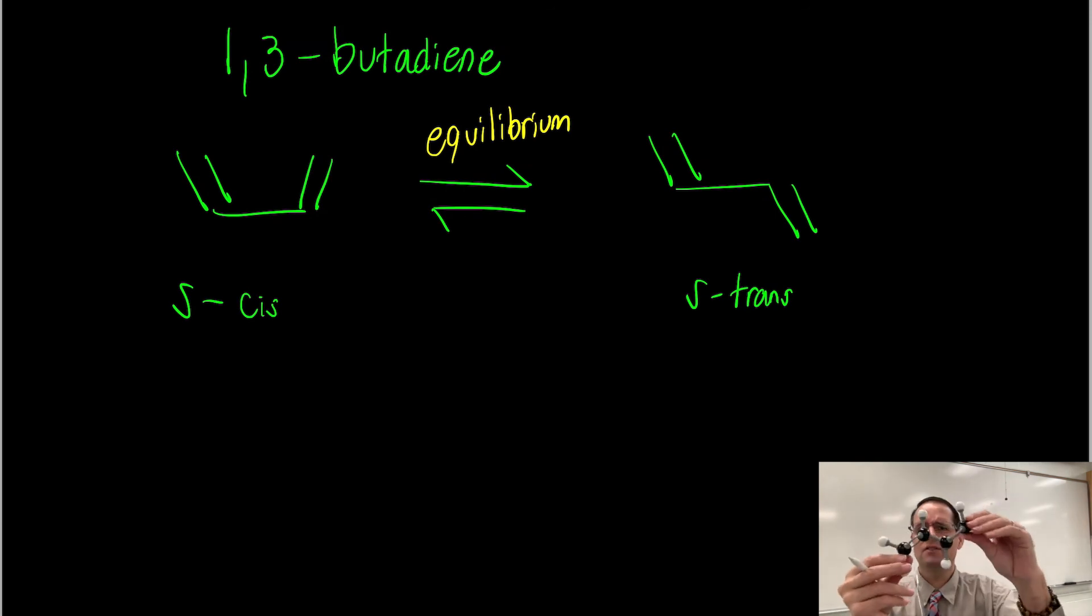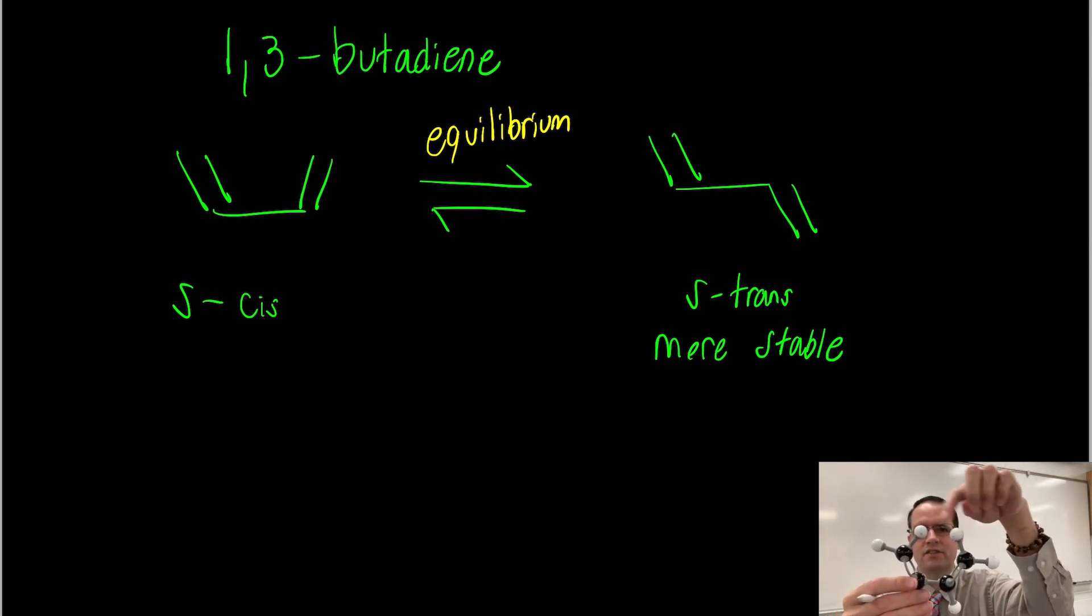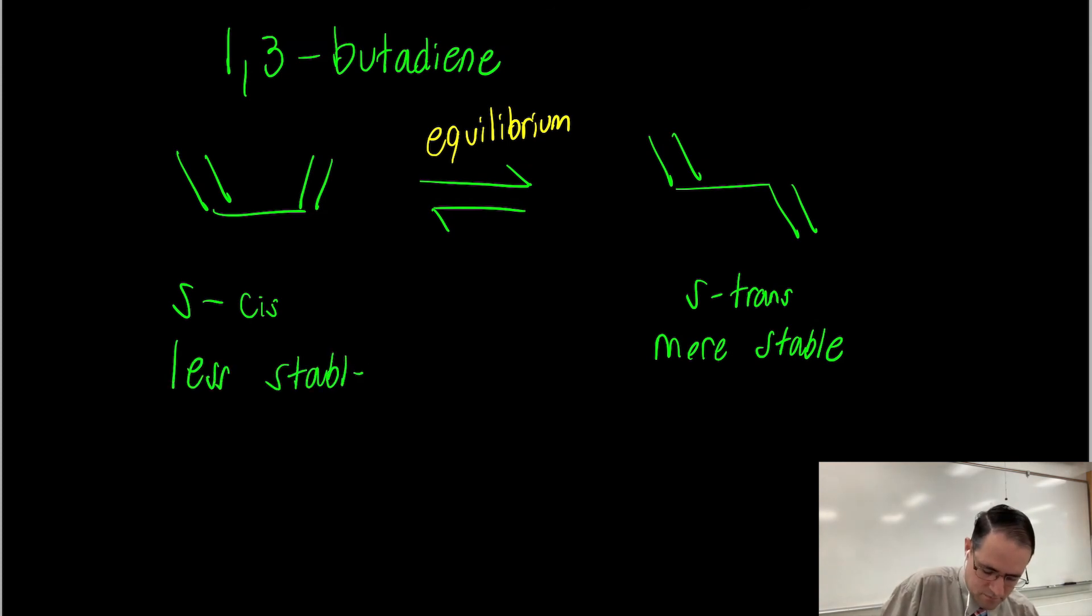Now, the S-trans is going to be the more stable conformation and the S-cis is going to be slightly higher in energy due to steric interactions between hydrogen atoms. I'll draw it here on the board with yellow. This hydrogen here and this hydrogen here experience a slight steric clash. So it's been found that the molecule prefers to be in the S-trans conformation. And this will become very important when we talk about the Diels-Alder reaction.